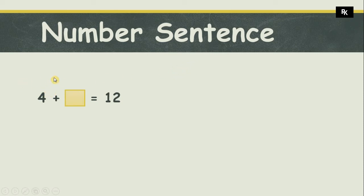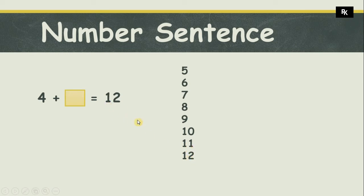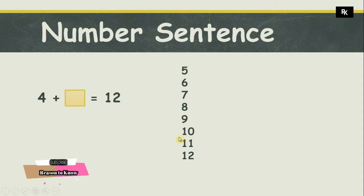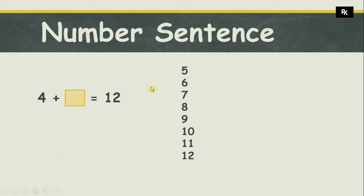Starting after four: five, six, seven, eight, nine, ten, eleven, twelve. My total was twelve, so I stop at twelve. Now count these numbers that I have counted after four.